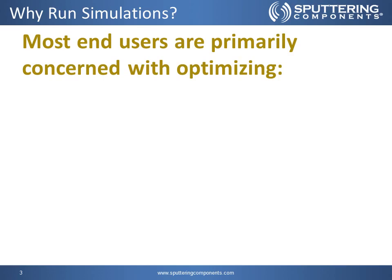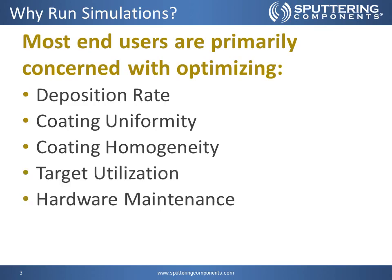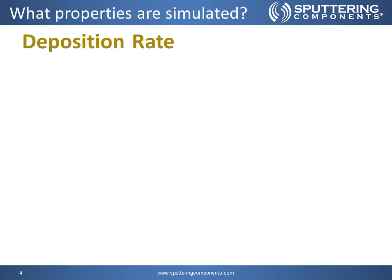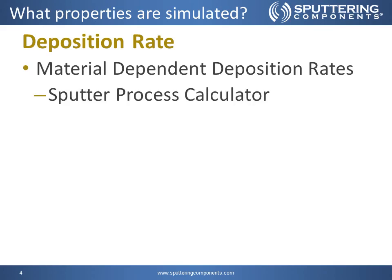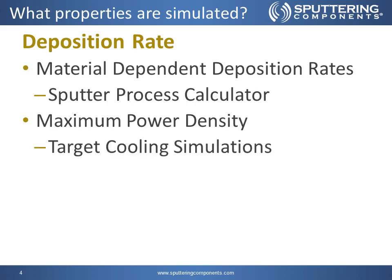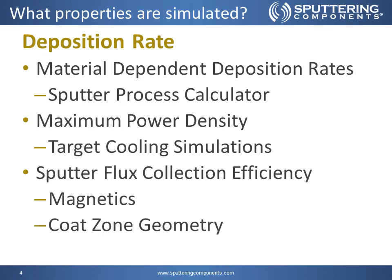Most users are primarily concerned with optimizing the deposition rate, coating uniformity, coating homogeneity, the target utilization, and hardware maintenance. For the deposition rate, we'll look at material dependent deposition rates as a function of the sputter process calculator, the maximum power density for the target as a function of the target cooling simulations, and the sputter flux collection efficiencies as a function of the magnetics so we know where the plasma is on the surface of the substrate, and then the rest of the code zone geometry.